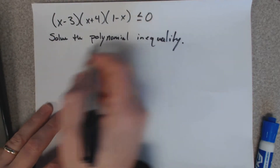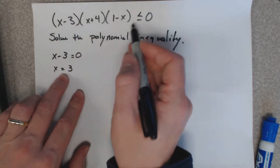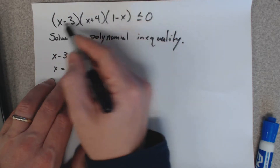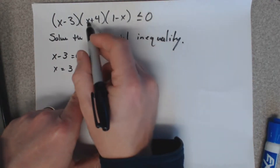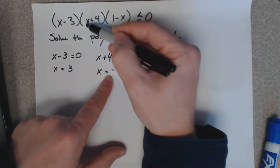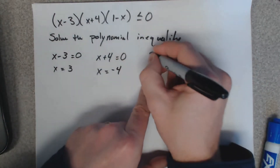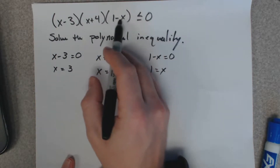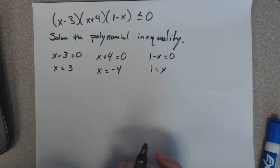Setting each factor equal to zero tells you what values give zero. So X must equal 3 — if you plug 3 in, 3 minus 3 is 0, and 0 times anything is 0. Similarly, X equals negative 4, and X equals 1 — plugging those in gives zero for their respective factors. If there were only an equal sign here, you'd be done with three answers, but polynomial inequalities require more work.